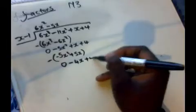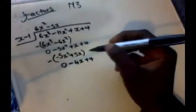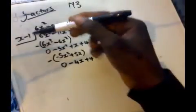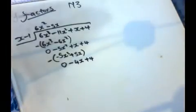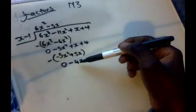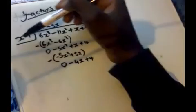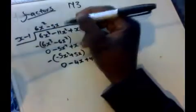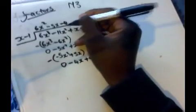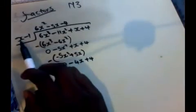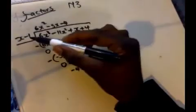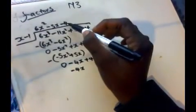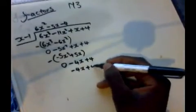We bring down the 4. Then we do the same thing again — we divide negative 4x by x, which gives us minus 4. Then minus 4 multiplied by x gives us minus 4x. Negative 1 multiplied by negative 4 gives us positive 4.